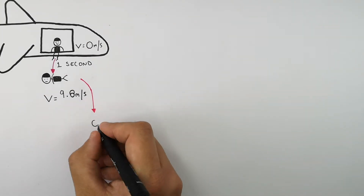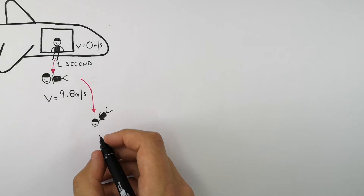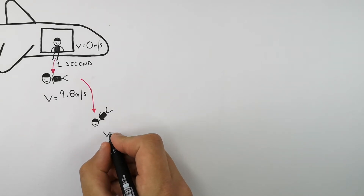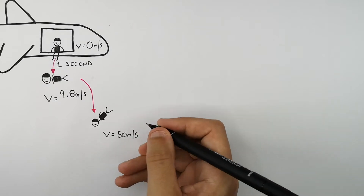And then they fall for another six seconds. During this six seconds, they increase their velocity from 9.8 meters per second to a final velocity of 50 meters per second.